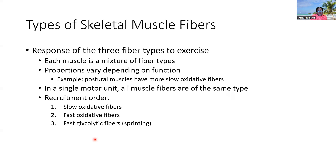Connecting this to recruitment: recruitment happens on the basis of small then large — the size principle. Following that principle, slow oxidative fibers will be recruited first. Fast oxidative fibers, being the intermediate, will be recruited second. Fast glycolytic fibers, the biggest and fastest, will be recruited last. So the size principle applies to the order of recruitment based on muscle fiber type as well.